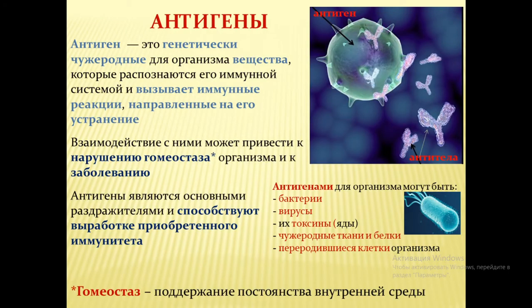Антиген — это генетически чужеродное для организма вещество: различные патогены, такие как бактерии, вирусы, токсины, яды бактерий, чужеродные ткани, белки и переродившиеся клетки организма. Взаимодействие с антигенами может привести к нарушению внутреннего состояния организма и заболеванию. Антигены раздражают и способствуют выработке приобретённого иммунитета.